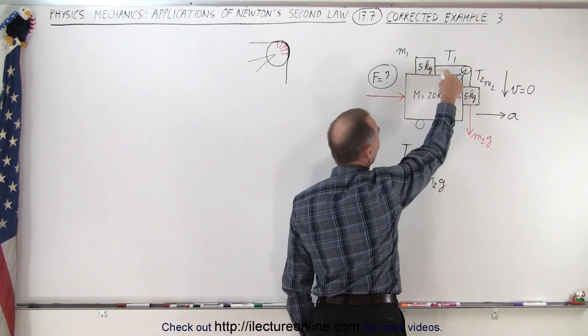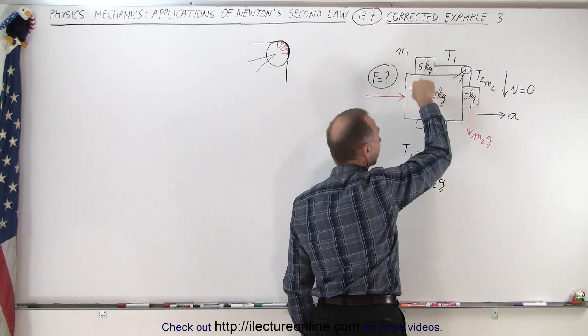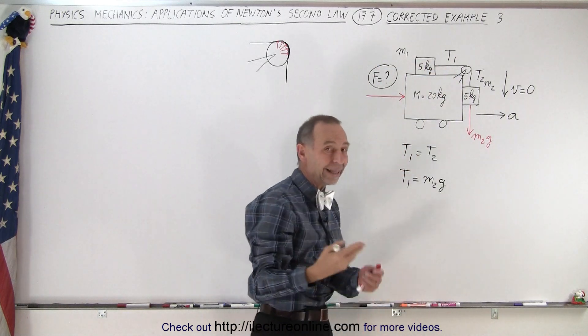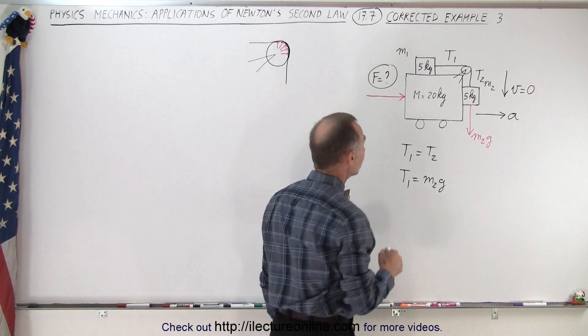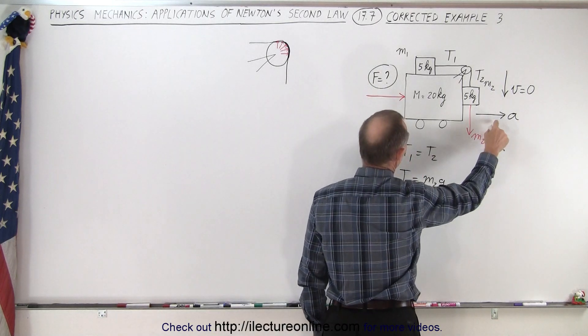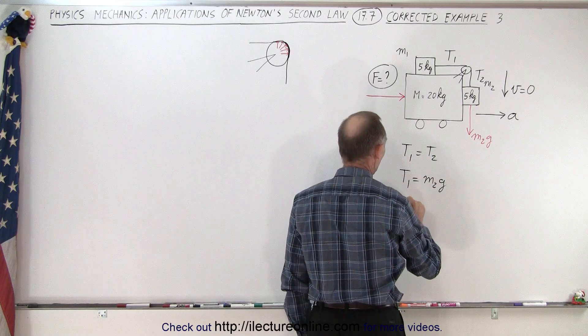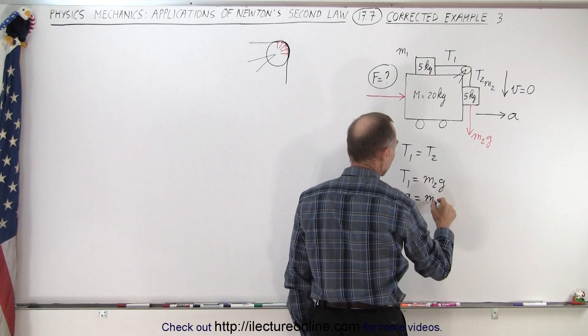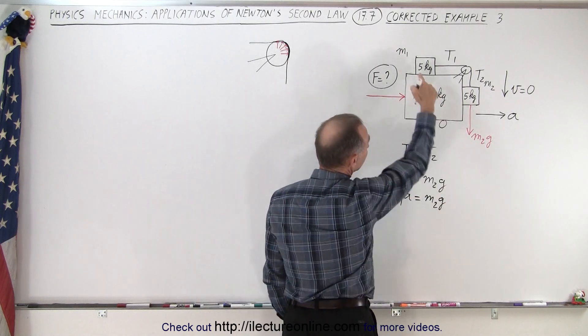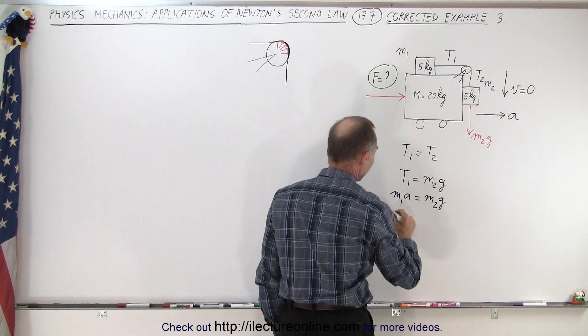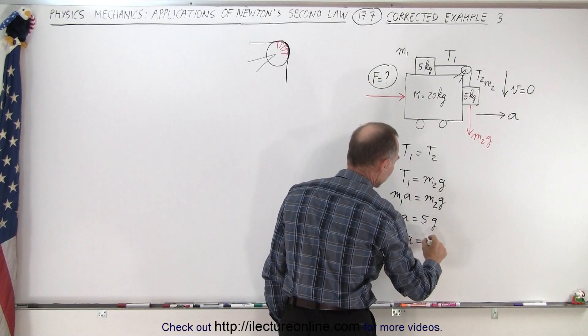Then we can look at this force right here and realize that T1 is going to be the force pulling this block to the right, making it accelerate. And so that tension will be equal to the mass and its acceleration. And so we assume that acceleration to be A, and so therefore T1 will be equal to M1A. And so therefore M1A must be equal to M2G. But since M1 and M2 are equal to each other, they're both five kilograms. We can say five times A equals five times G, or A equals G.